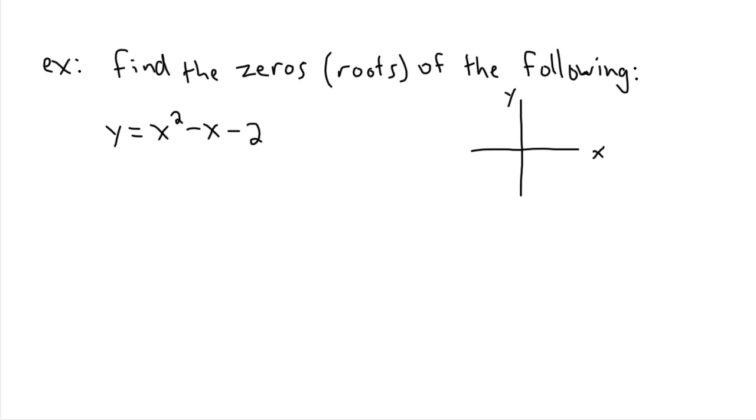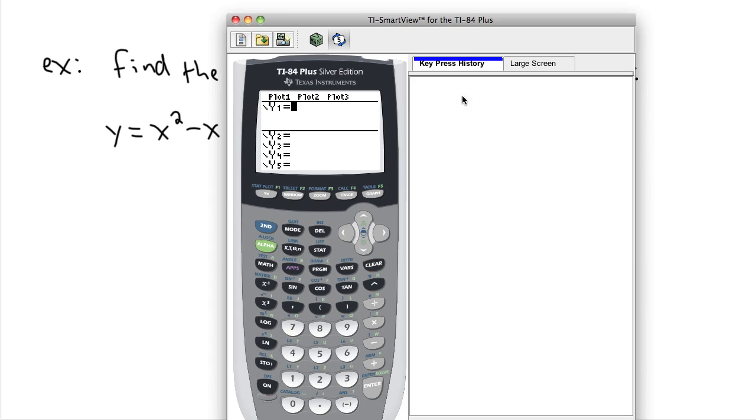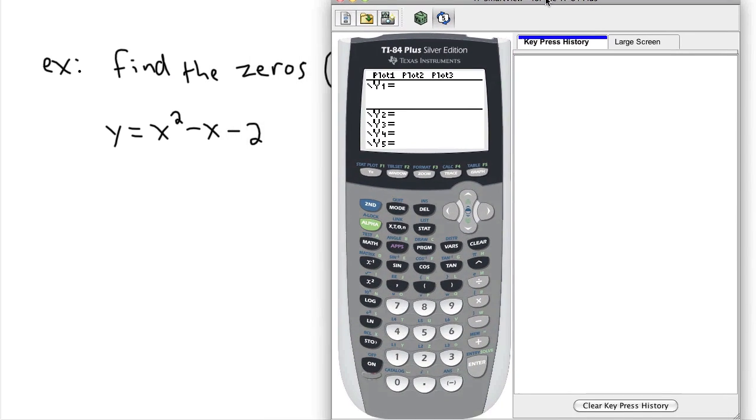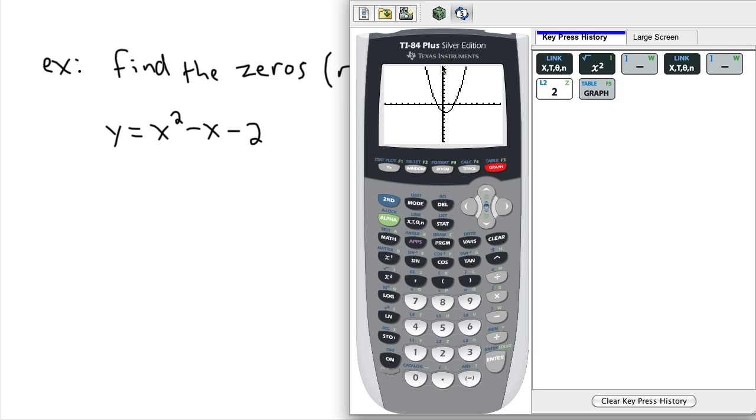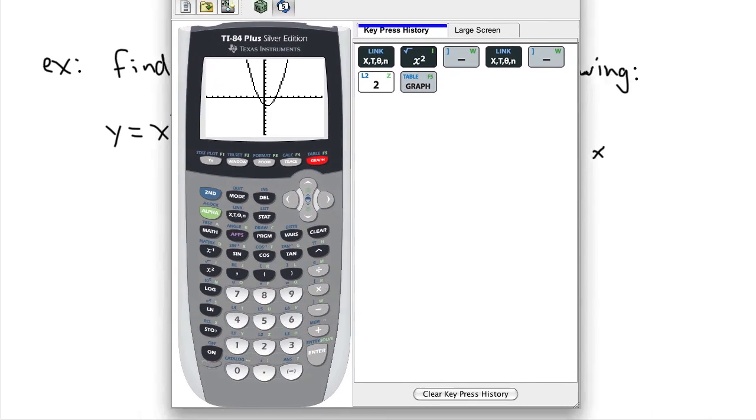So what I'm going to do is take a look at my trusty calculator here and I need to be sure to put in the right equation. So x² - x - 2. I press graph. There it is. That's great. So it opens upwards like I was hoping.